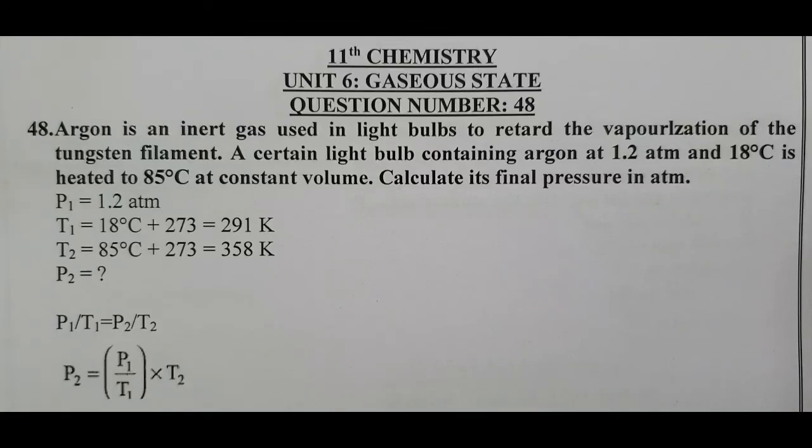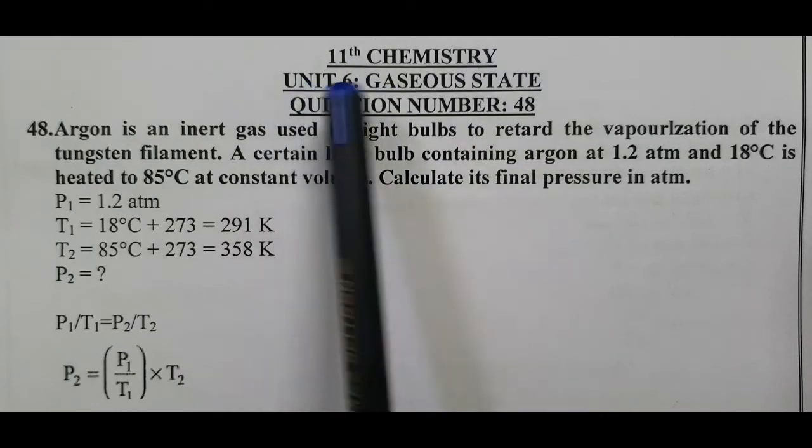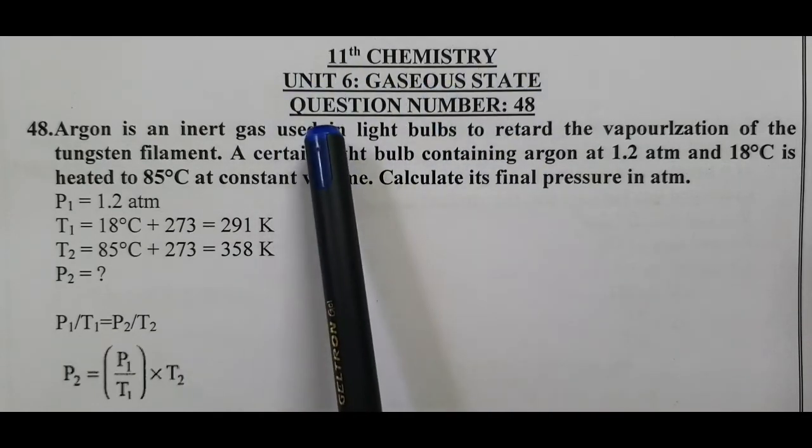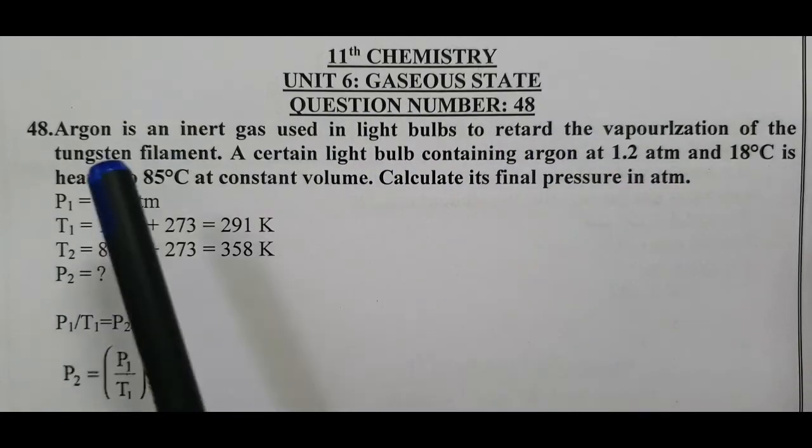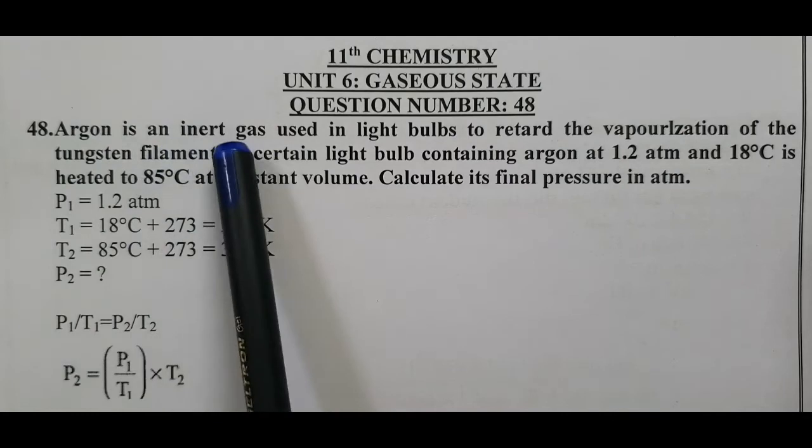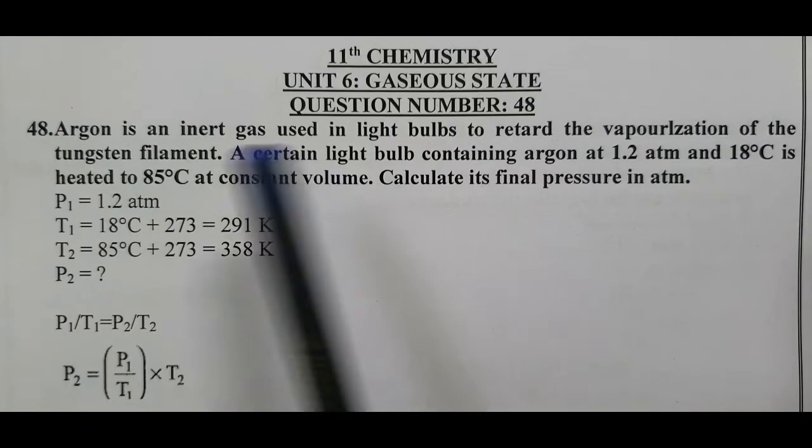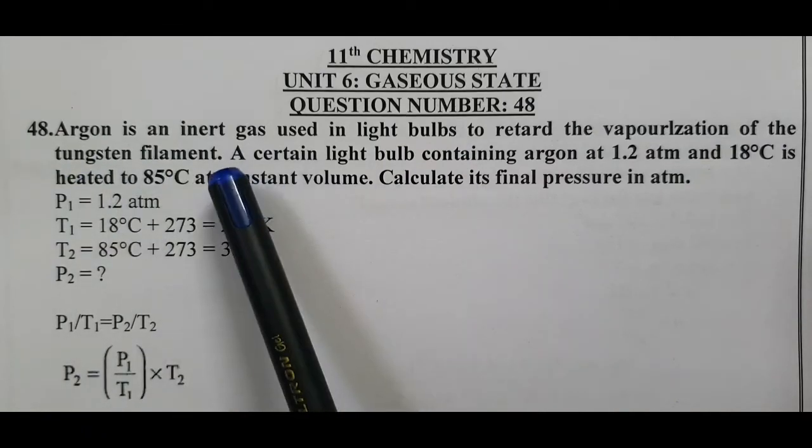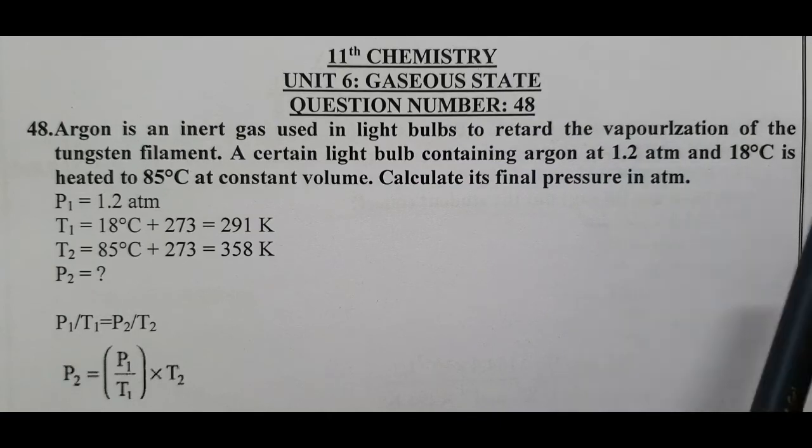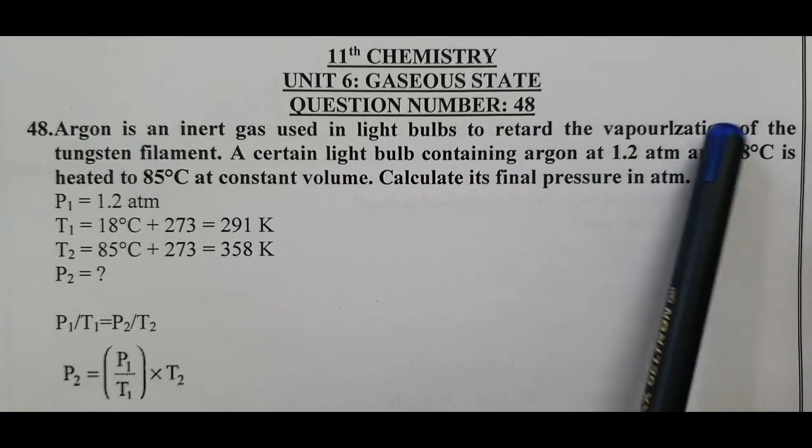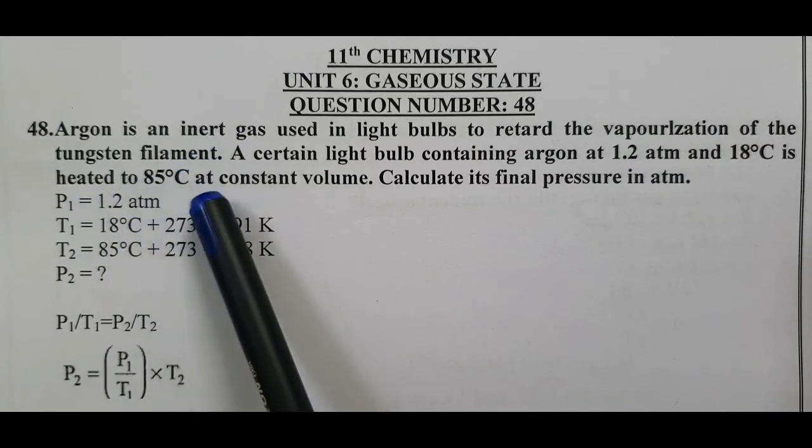Peace be upon you and your family. 11th Chemistry, Unit 6: Gaseous State. Question number 48: Argon is an inert gas used in light bulbs to retard the vaporization of the tungsten filament. A certain light bulb containing argon at 1.2 atmospheric pressure and 18 degrees Celsius is heated to 85 degrees Celsius at constant volume. Calculate its final pressure in atmospheres.